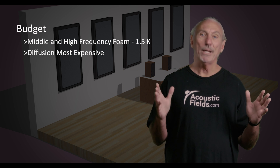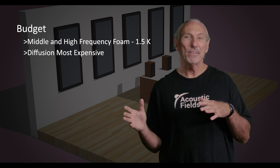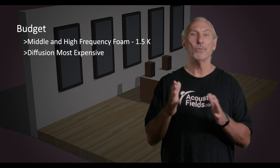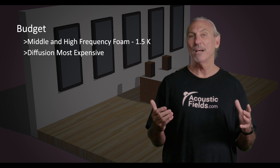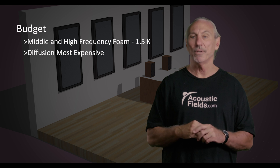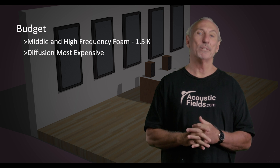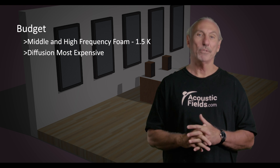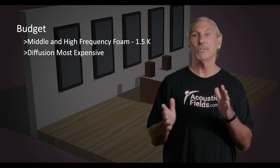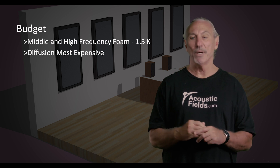So for budget: you need $5,000 to $10,000 for low frequency management, about $1,000 to $1,500 for middle and high frequency, and then diffusion is something you can consider down the road — that's obviously the most expensive. I hope that gives you some idea of what to plan for in terms of money.